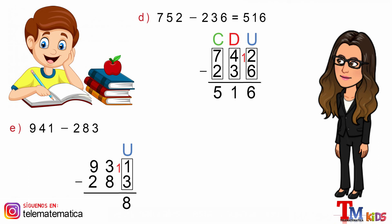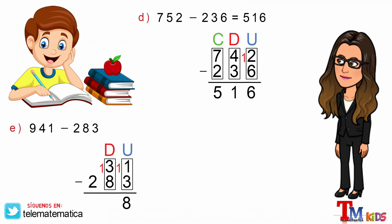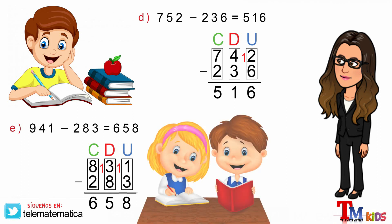En tercer lugar, identificar la columna de las decenas y restar. Pero tampoco podemos restarle 8 al 3, entonces le pedimos una prestada a la centena: el 3 se transforma en 13 y el 9 se transforma en 8. Luego restamos: 13 menos 8 es igual a 5. Y por último, identificar la columna de las centenas y restar: 8 menos 2 es igual a 6. Y este resultado lo escribimos en la operación de 941 menos 283.